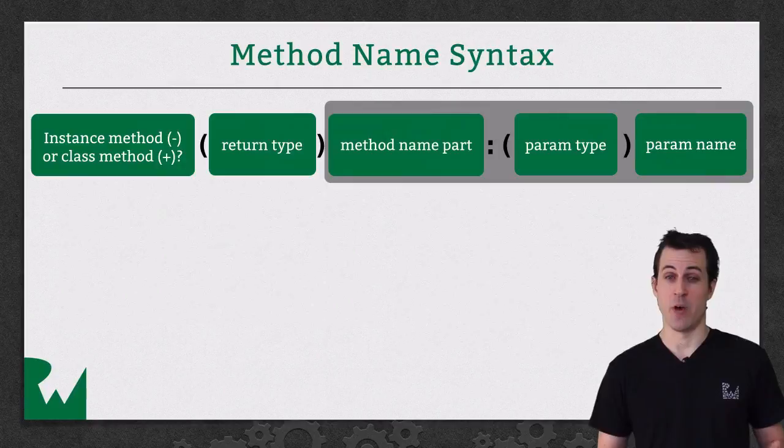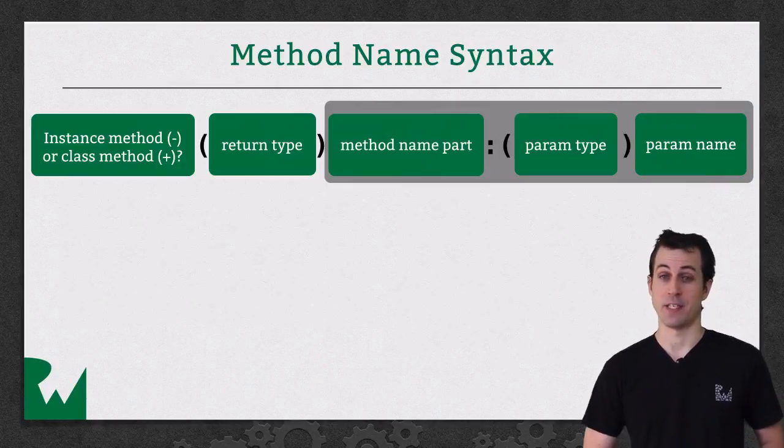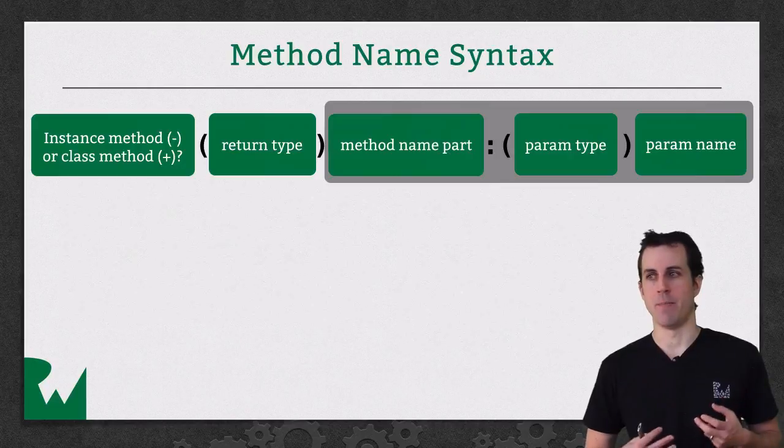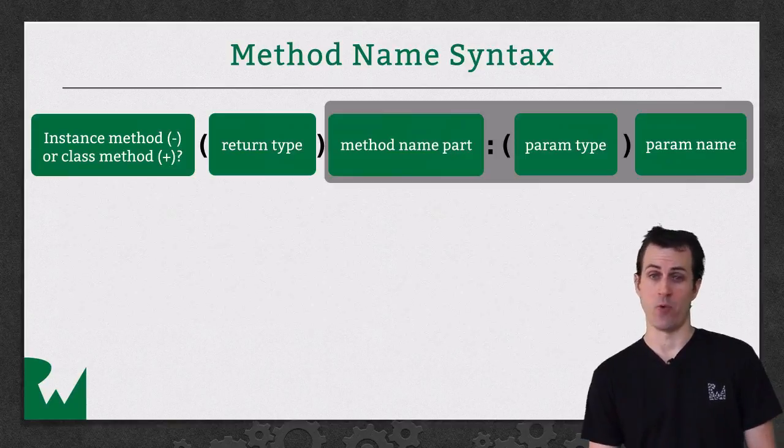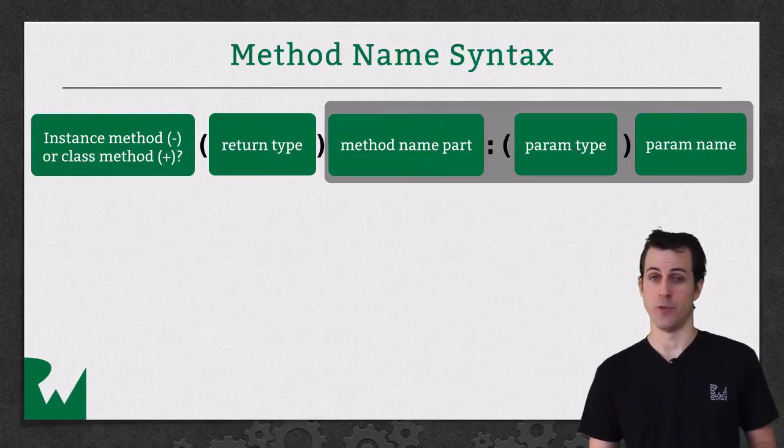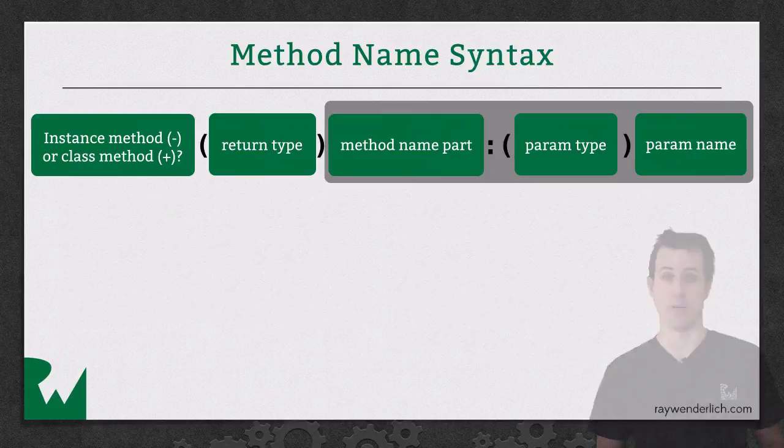Okay, now that we've created a class, we want to create some methods inside the class. But how does the syntax for that work in Objective-C? So to me, getting used to the method name syntax was one of the weirdest things when transitioning from other languages. I came from a C and a Java background. But once you get it, I think you'll really like it. Because it actually makes your code much easier to read. So let's go over how it works here.